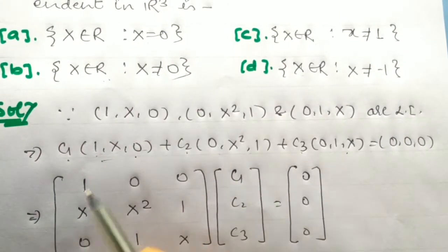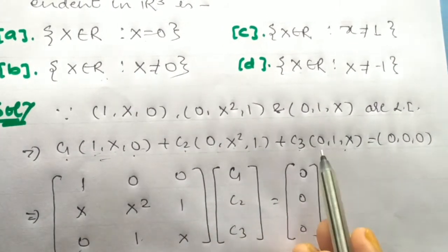The vectors are: (1, x, 0), (0, x², 1), and (0, 1, x). We write these as columns in our matrix.